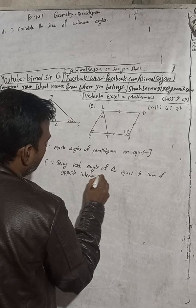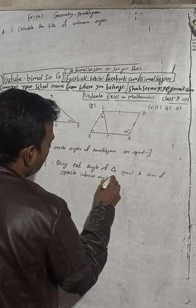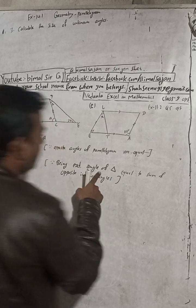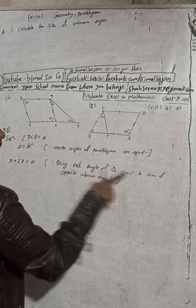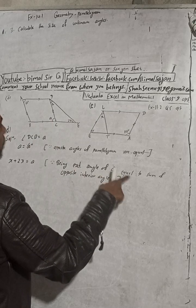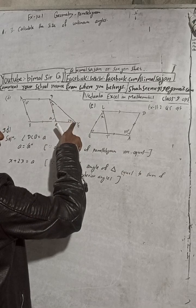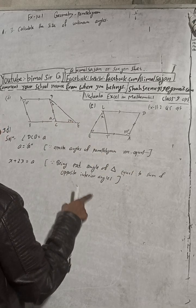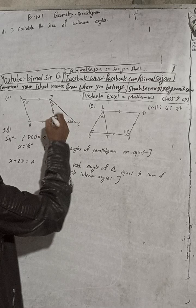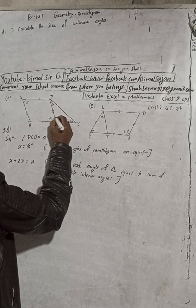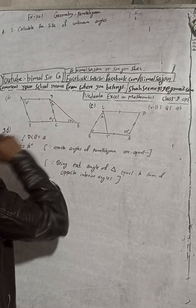Being exterior angle of triangle, this exterior angle is being external of triangle equal. This angle is equal to sum, means this plus this, sum of opposite interior angles. These two are opposite to this, okay, that means opposite angles.